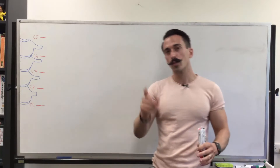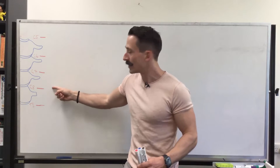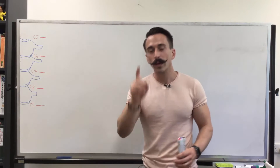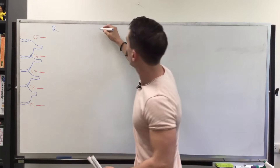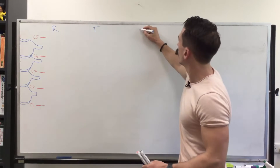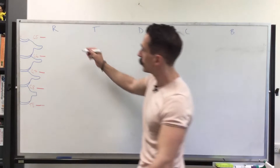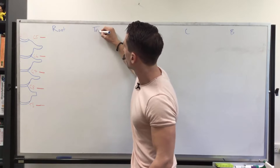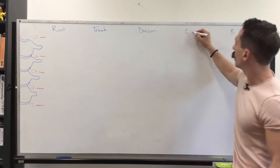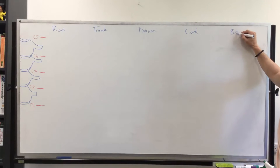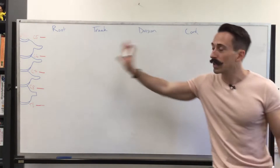The brachial plexus begins with five nerve roots: C5, C6, C7, C8, and T1. We need to know two mnemonics to get going. The first mnemonic is 'Remember to drink cold beer,' which stands for Root, Trunk, Division, Cord, and Branch. Ultimately we want to get to the five branches from these five nerve roots.